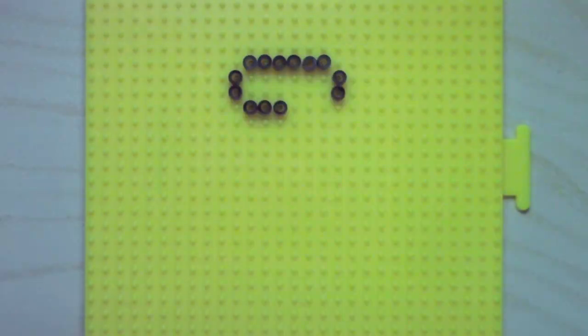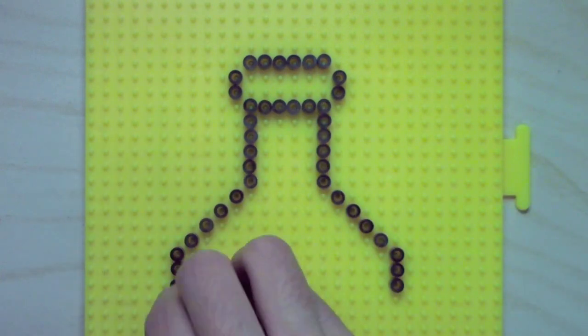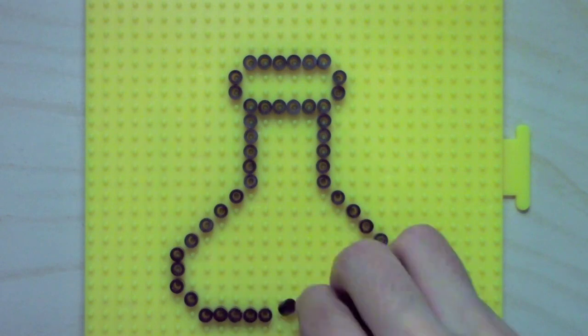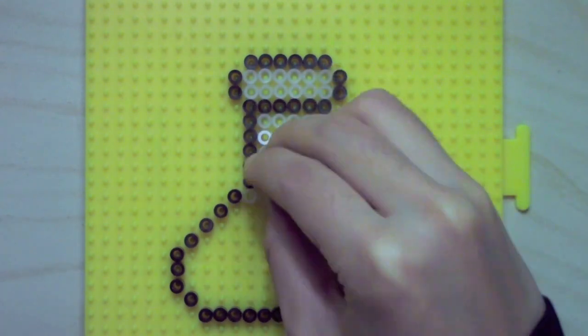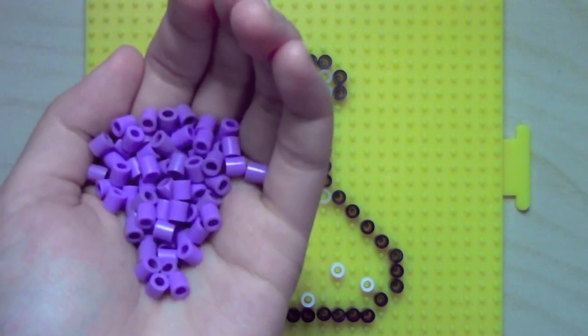The last piece of lab equipment that I'm making here is an Erlenmeyer flask. It has more of a cone shaped bottom as opposed to the round one that you saw in the beginning. And after adding the clear beads as well as white measuring lines, I'm going to put in little bubbles to show that a reaction is occurring or has occurred. And then I'm filling it with any color.